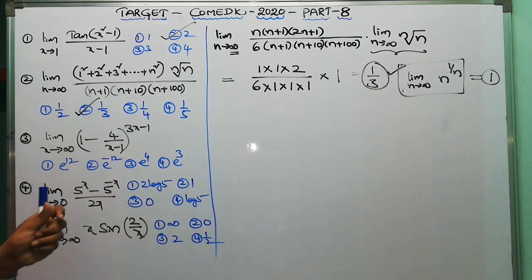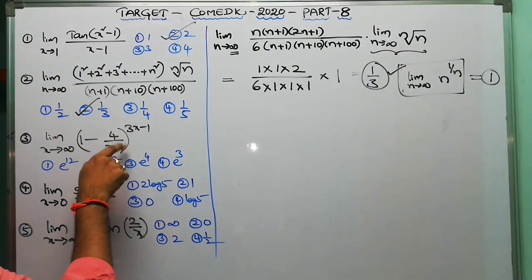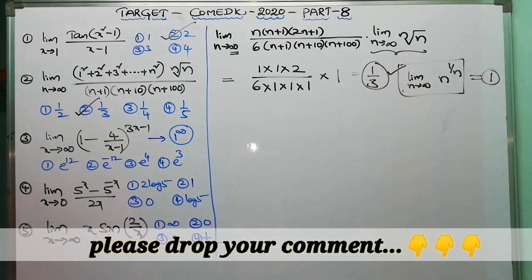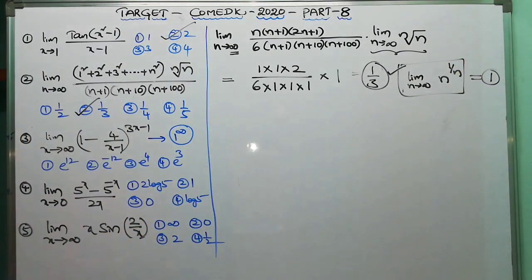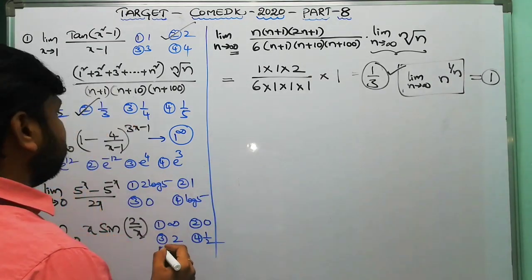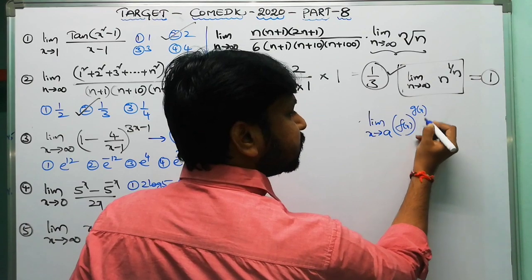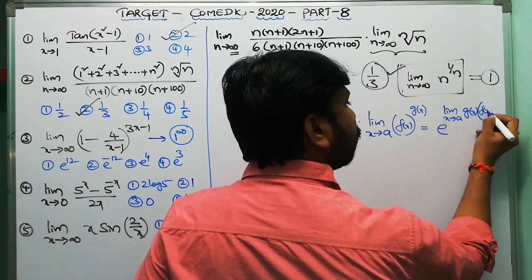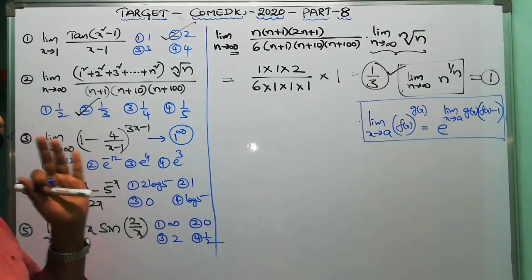Third question: limit x tends to infinity, (1 - 4/x - 1)^(3x-1). If you substitute infinity, 4/infinity = 0, giving 1 power infinity — this is a 1^∞ form. For this type, apply the special rule: limit x tends to a of f(x)^g(x) = e^[limit x→a of g(x)·(f(x)-1)]. This rule was discussed in shortcut number 15 in limits.